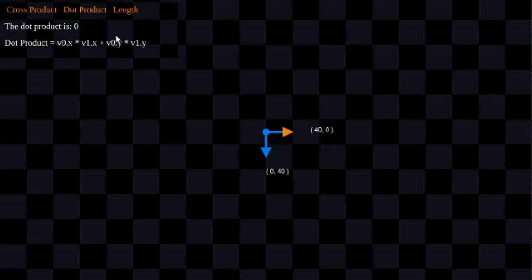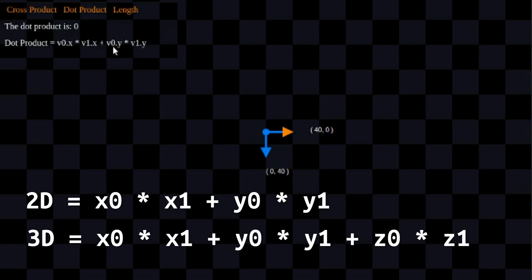This is the 2D version of the dot product formula. If you want the 3D version, simply add V0.Z multiplied by V1.Z to the end of it. The cool thing about 2D dot product is it's basically just 3D dot product when the Z values of both of your vectors are 0. So effectively these are 3D vectors — the Z value of each is just 0.